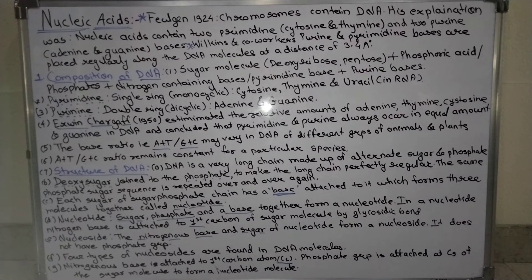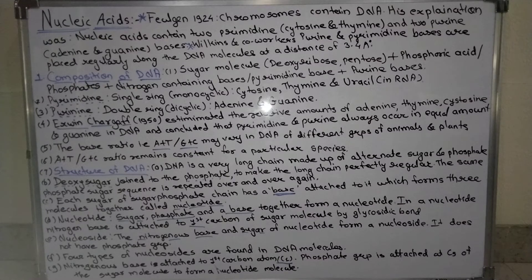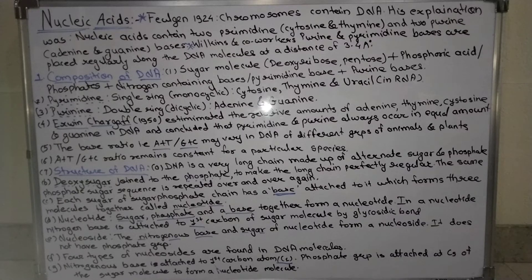DNA is found in chloroplasts and mitochondria. DNA is the hereditary material in most organisms. Nucleic acids are among the largest molecules found in living beings. They contain three types of molecules: the five-carbon (pentose) sugar, phosphoric acid, and nitrogen-containing (nitrogenous) bases. These three joined together form a nucleotide of the nucleic acid.